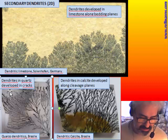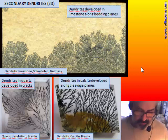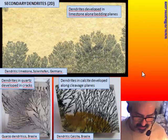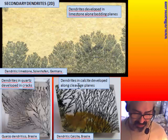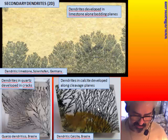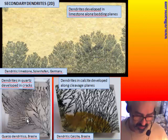Also very famous are dendrites that develop in cracks inside quartz crystals — this is typical from Brazil and is used to produce very nice gemstones. A rarer type, also from Brazil, is a dendrite grown inside a calcite crystal, where the dendrites grow along the cleavage planes of the calcite, parallel to a face of the crystal but inside it. All these dendrites are secondary in the sense that they grow after the solidification of the limestone, quartz, or calcite.